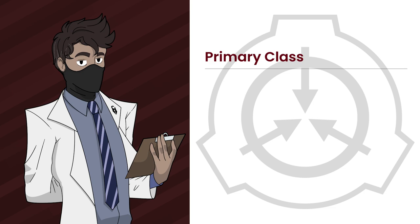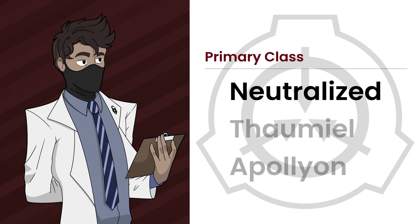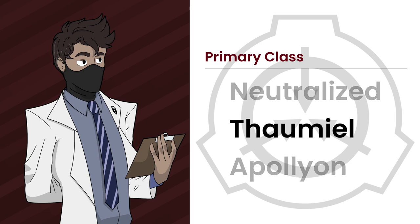You'll start noticing some similarities to the RPC Authority's object class system, but there are three specific object classes that don't quite fit the containment difficulty definition: Neutralized, Thaumiel, and Apollyon. Neutralized shouldn't be under this category as it doesn't really determine containment difficulty. Thaumiel is a unique case — whilst it 'contains other anomalies,' it doesn't really explain how difficult it is to contain a Thaumiel anomaly, so the definition remains quite vague.